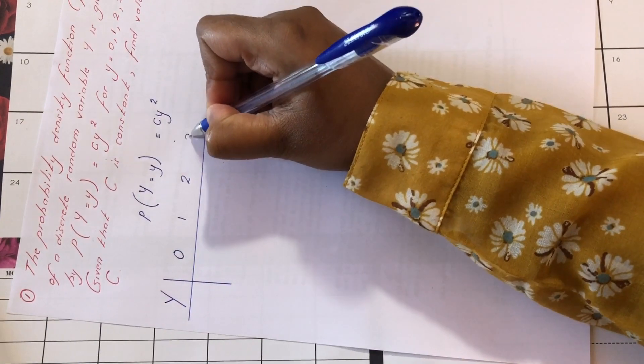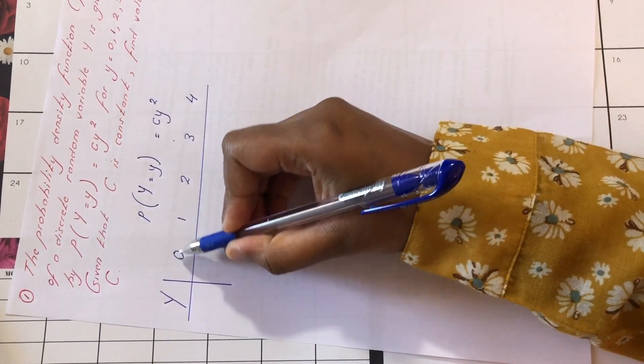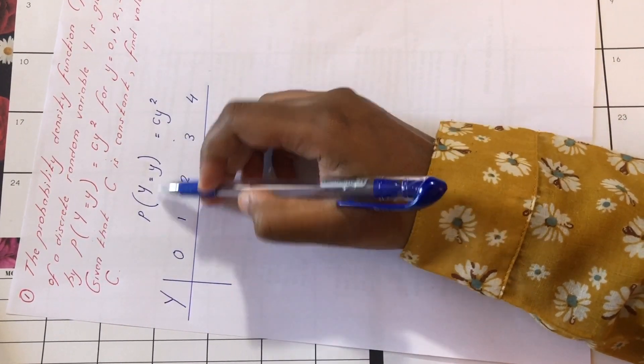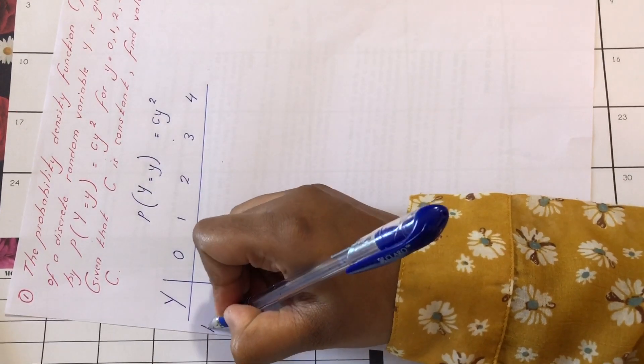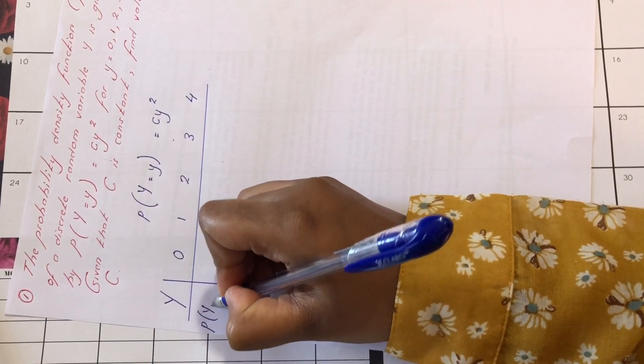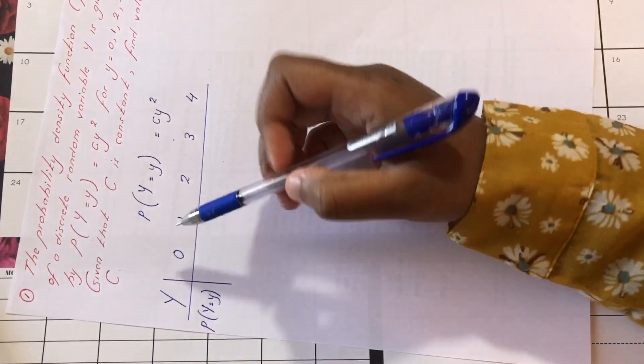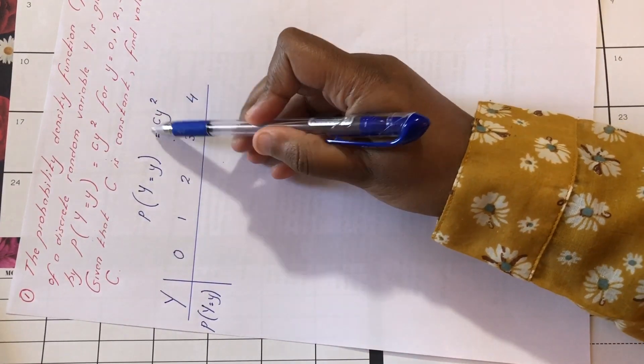Since we are looking at discrete random variable, we have the random variable y and y can take values 0, 1, 2, 3 and 4. So for each value of y, we are going to find the probability of y equals y. We are going to replace each value in this function.